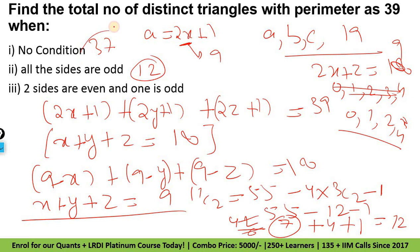Pehle agar 37 tha no condition ke liye. Ab two sides are even and one side is odd — toh yahan humko kuch calculate nahi karna. Odd perimeter mein kya kya possibility ho sakti hai? Ya toh all sides odd hongi tabhi odd aayega, ya toh 2 sides even hongi tabhi odd aayega — kyunki even plus odd is odd hota hai. Toh third nikalana hai toh total mein se odd wala minus kar denge: 37 minus 12 = 25 is the answer.